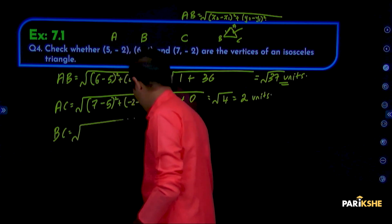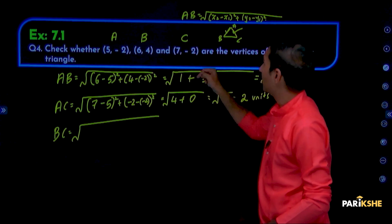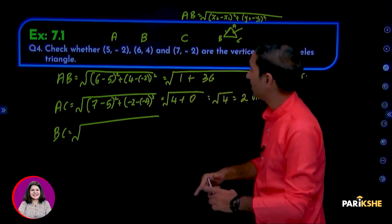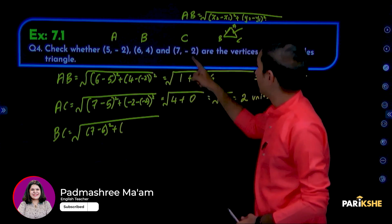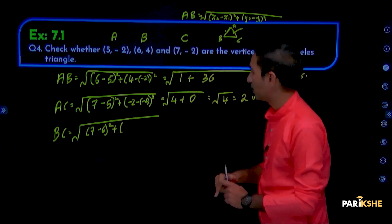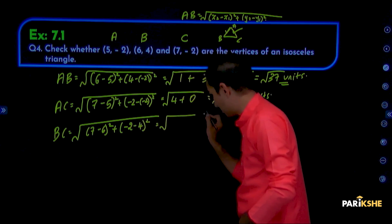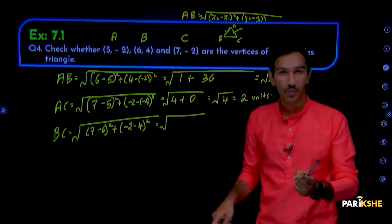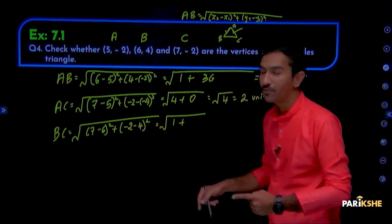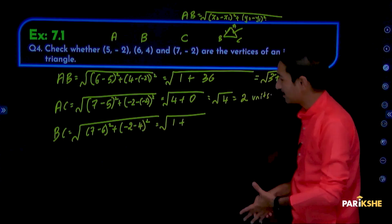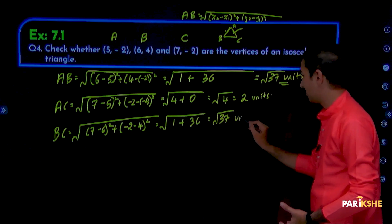Next, BC. B is (6, 4), C is (7, -2). BC = √((7-6)² + (-2-4)²) = √(1² + (-6)²) = √(1 + 36) = √37 units.